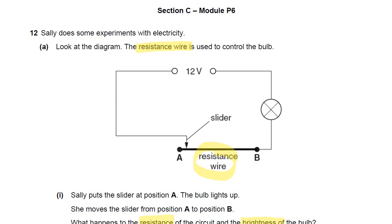A little bit about resistances through wires: the longer the wire, or the longer the section of wire the current travels through, the higher the resistance will be. So as it goes from A to B, think about how much resistance there will be to the current. The brighter the bulb will be when the current is higher — so think, is the current going to be higher when the resistance is higher, or when the resistance is lower?